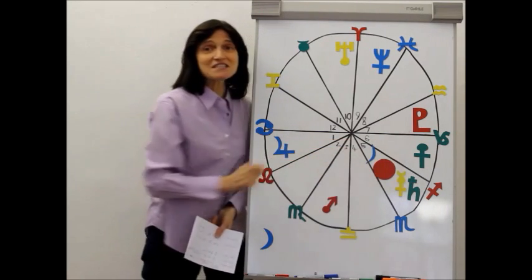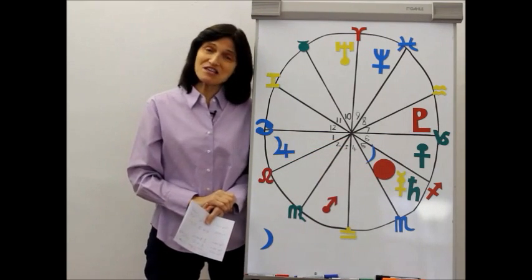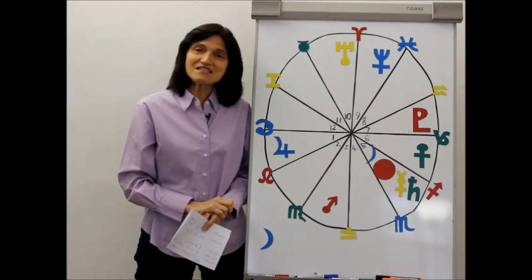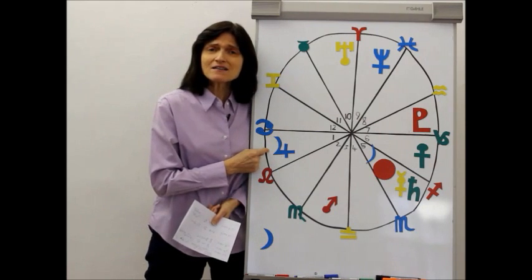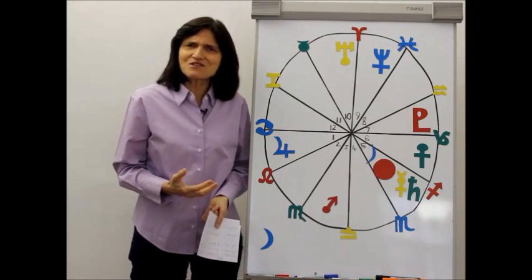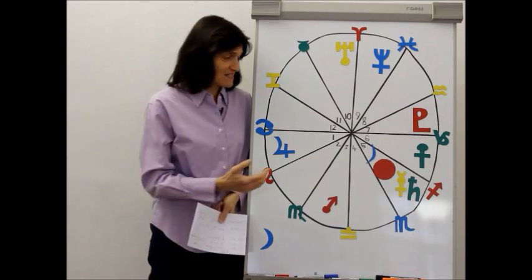The 5th house is the house of gambling, of speculation. You might be tempted to take a risk. And what I meant by risks with Jupiter in your sign is obviously taking calculated risks, not silly risks.